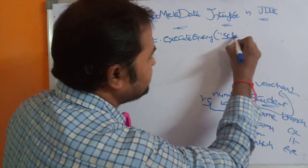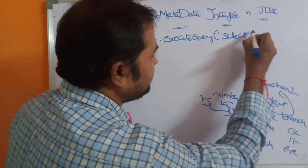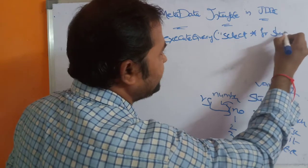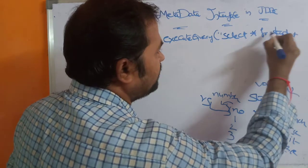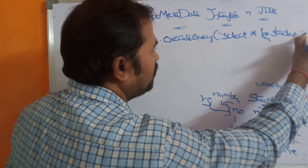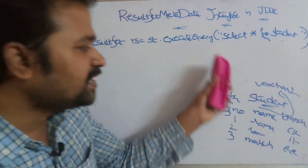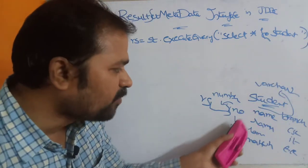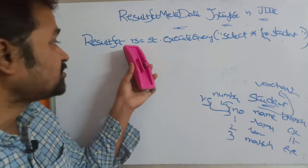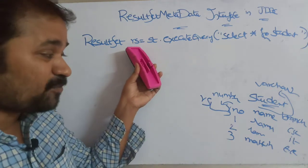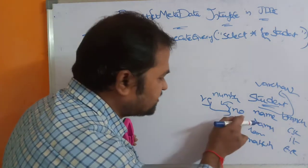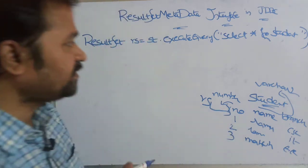Let the query be: SELECT * FROM student. The student table contains three records, so those three records will be stored in the ResultSet object. Now RS points to before the first record.